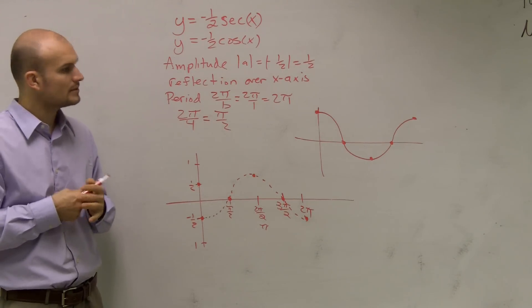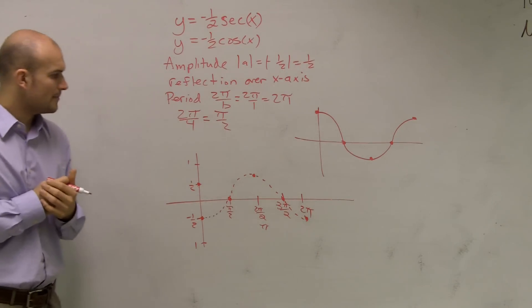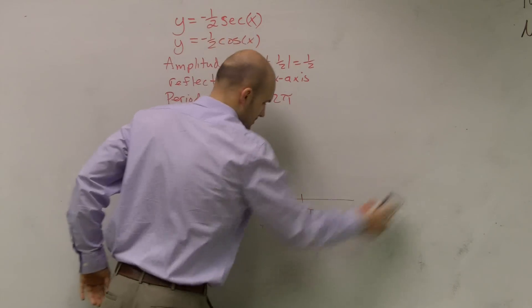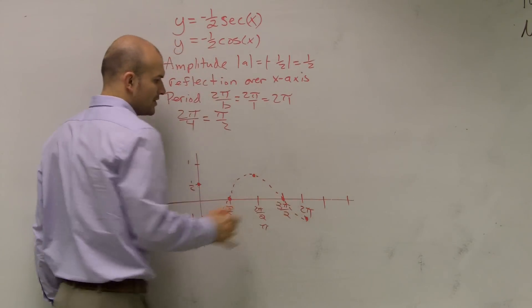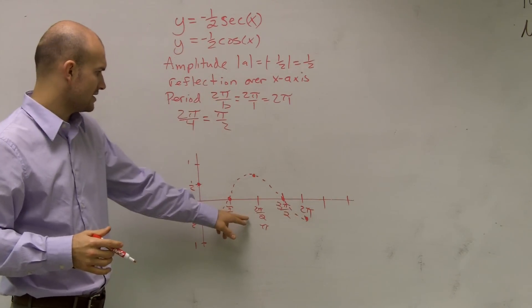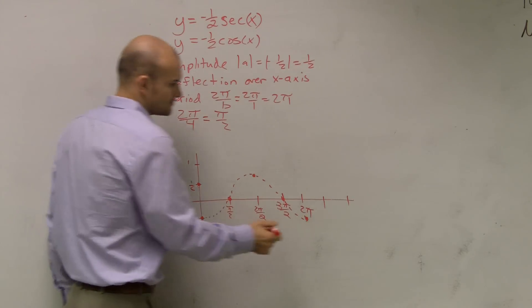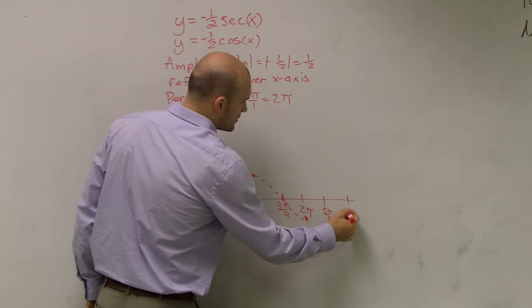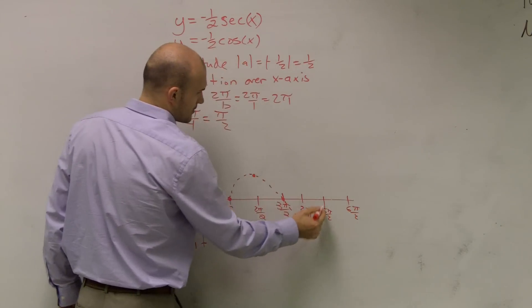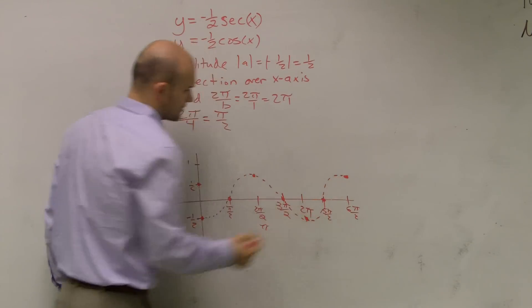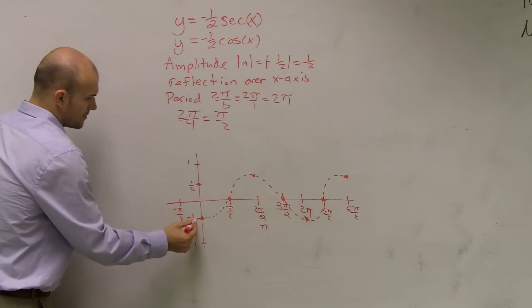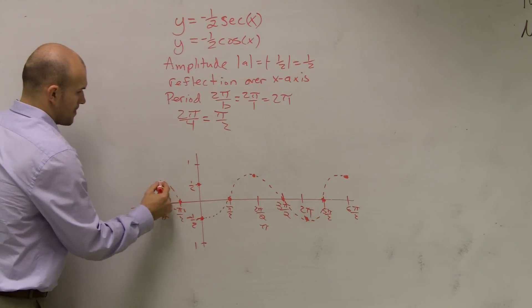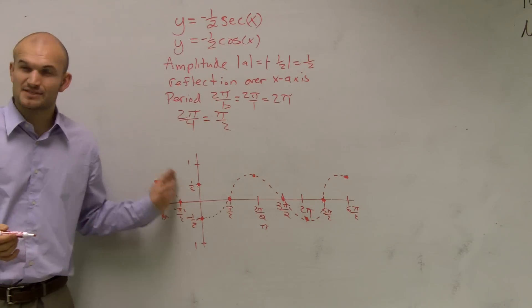Now we need to make sure we're graphing at least two periods. If I add another π over 2, we have 3π over 2, 4π over 2, this would be 5π over 2, 6π over 2. You could also go in the negative direction. So everybody sees what this graph is.